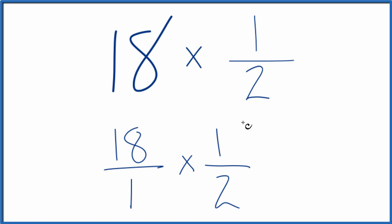So with fractions, when we're multiplying, we multiply the numerators, then the denominators. So 18 times 1, that's 18. 1 times 2, that's 2. So 18 times 1 half equals 18 over 2.